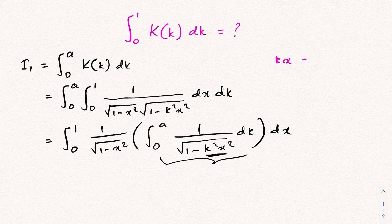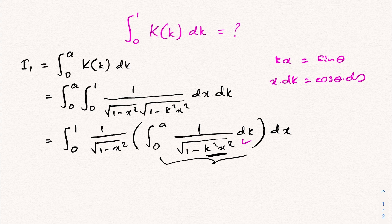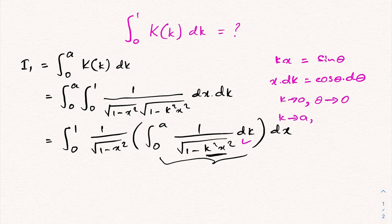Let kx equal sine of θ. Differentiating, x dk equals cosine θ dθ. For the lower limit, when k approaches 0, θ approaches 0. For the upper limit, when k approaches a, we have ax equal to sine θ, so θ approaches arcsin(ax).